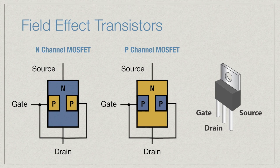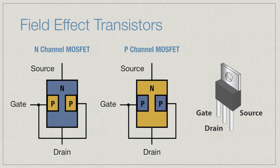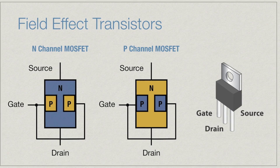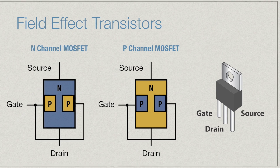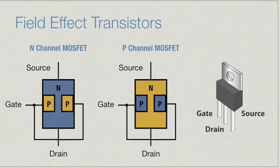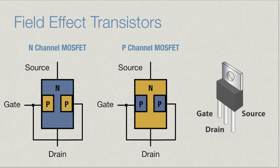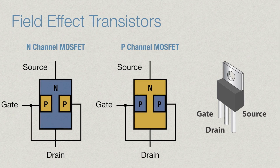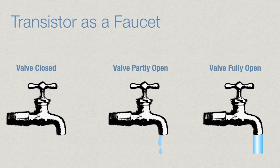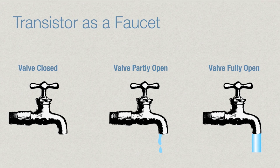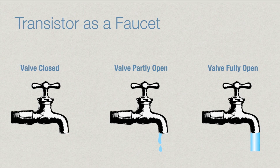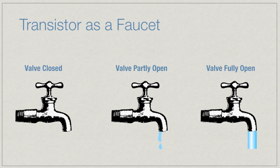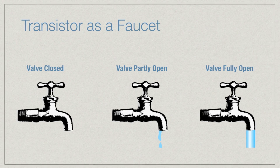Now let's take a look at field effect transistors. They contain either an N- or P-type semiconductor from top to bottom, which conducts a charge when the opposite N- or P-types on the side allow for conductivity. Whenever the gate has a voltage applied to it, charge flows from the source to the drain. To use a water analogy, a transistor is kind of like a faucet that controls the flow of water with a shutoff valve. The flow can either be on, off, or partially on, and in this way it acts almost like a variable resistor.